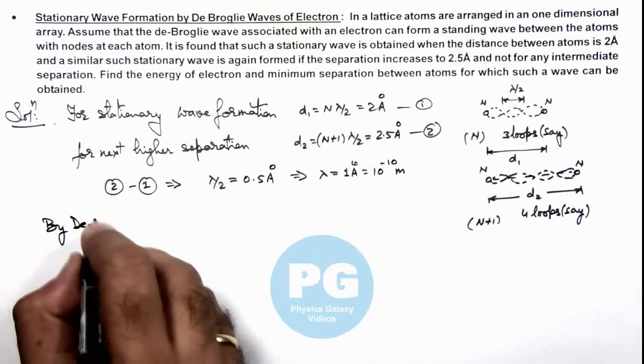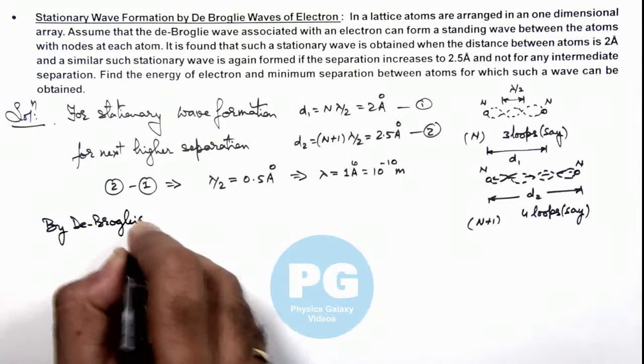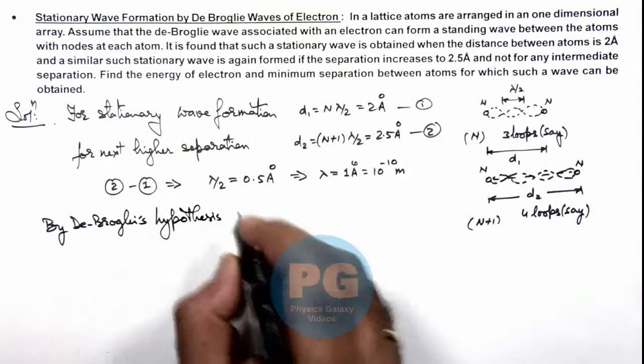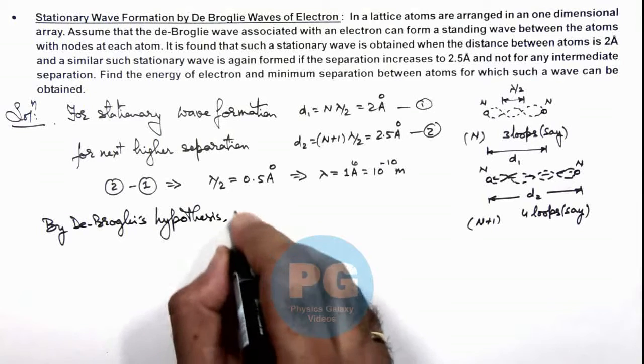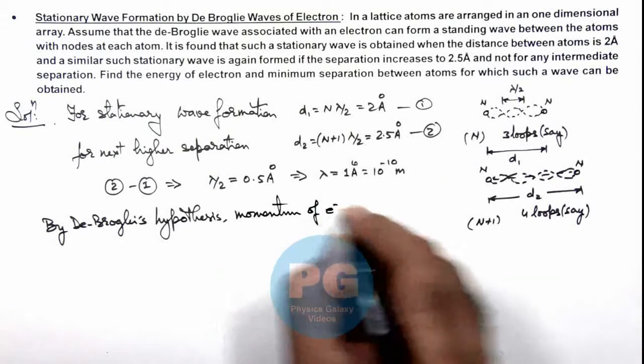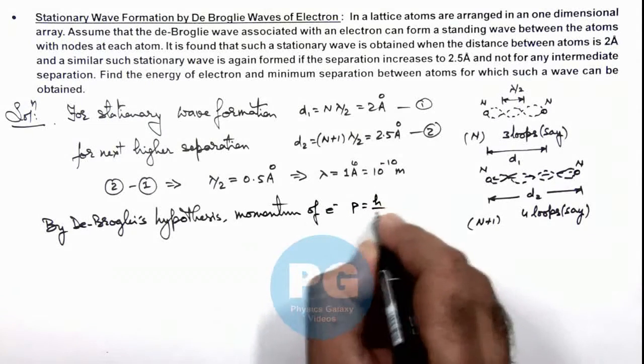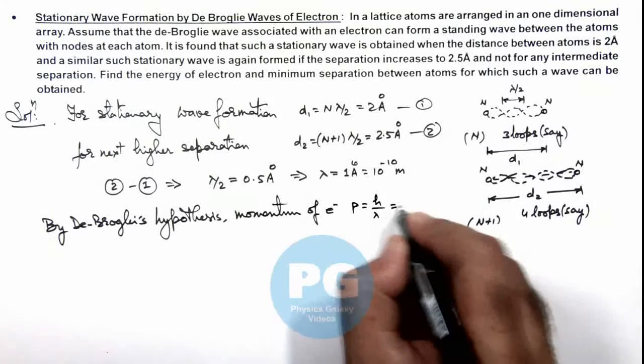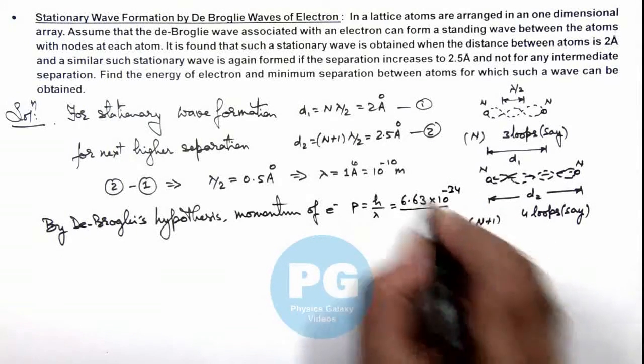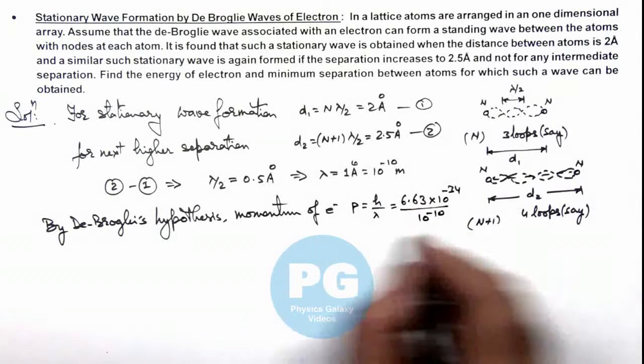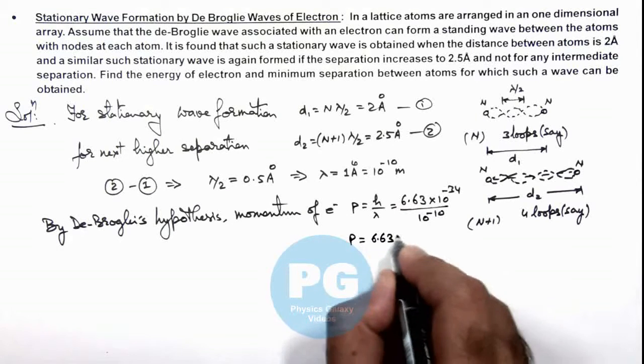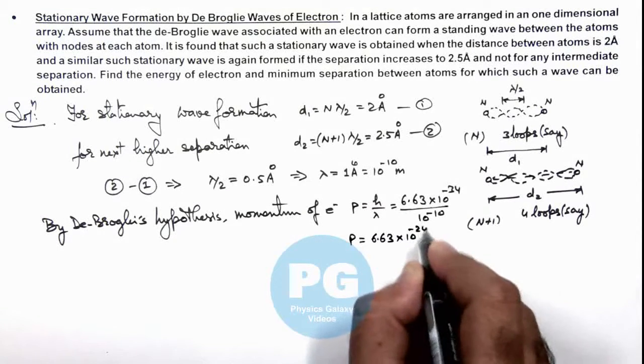By de Broglie's hypothesis, we can write the momentum of the electron p as h/λ, which is 6.63×10⁻³⁴ divided by the de Broglie wavelength of 10⁻¹⁰. So the momentum we are getting is 6.63×10⁻²⁴ newton-second.